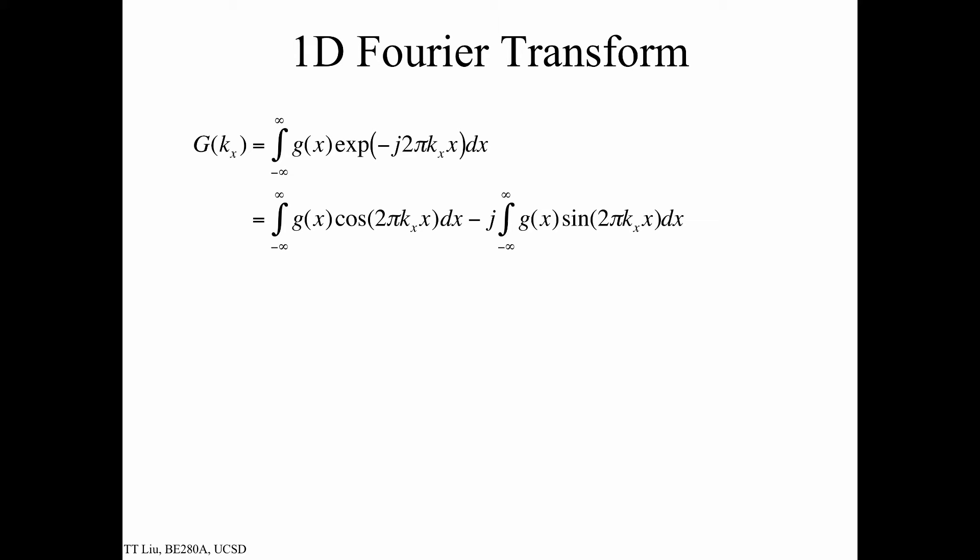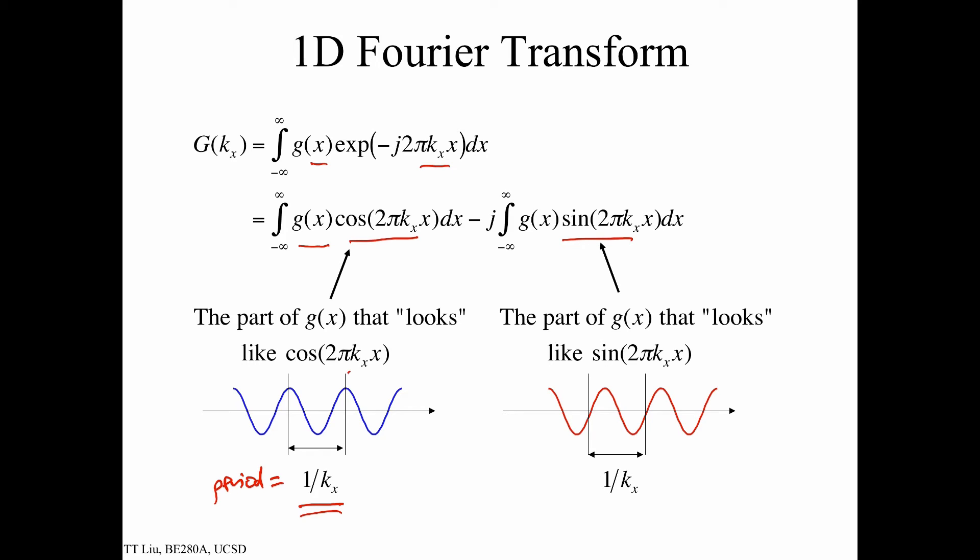Using that, we can write our 1D Fourier transform. Here we're using x and kₓ. We expand out into the cosine and sine components. When we're looking at this part of the expression, this is essentially taking g(x) and multiplying it by cos(2πkₓx) and integrating it. This is a form of an inner product, so it's really saying what part of g(x) looks like this function, cos(2πkₓx), where the period is simply 1/kₓ. The period is just 1 over the frequency. Similarly, the imaginary part is what part of g(x) looks like sin(2πkₓx). We're basically comparing our function g(x) to the sine function, which also has period 1/kₓ.